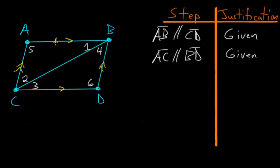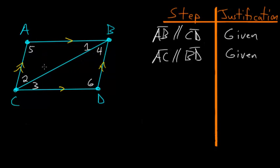Specifically, we want to show that AB equals CD and that AC equals BD. We also want to show that angle 5 equals angle 6, and that the other pair of opposite angles are equal. Finally, we want to prove that the diagonal BC cuts the area of this parallelogram in half.